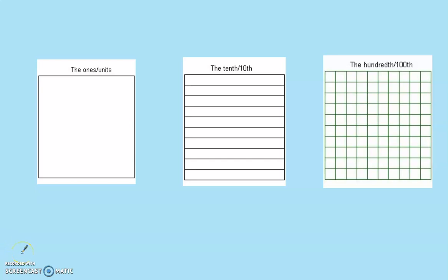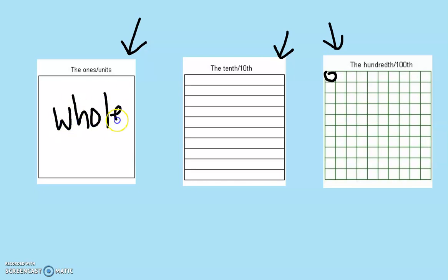This is Miss Melton to teach you about decimals. These are base ten blocks. Normally this is one flat which equals a hundred. Each flat has ten rods which makes a hundred, and a hundred ones make a hundred. Now think back to fractions — we're going to say this flat is a whole, and we can break the whole into ten parts, so each rod equals one tenth, and one small unit is one out of a hundred.